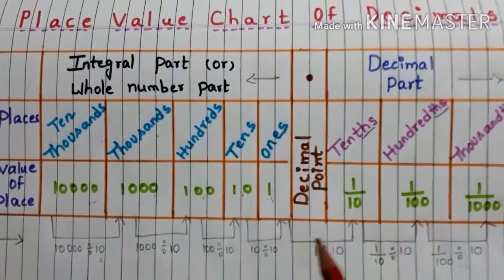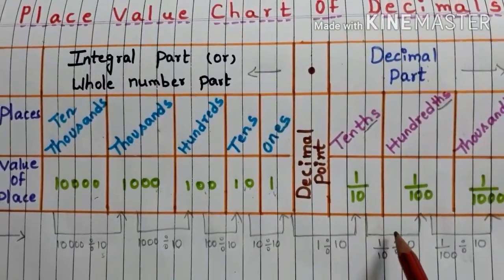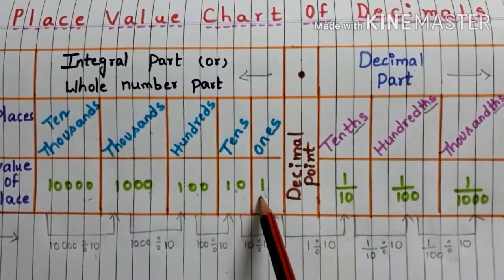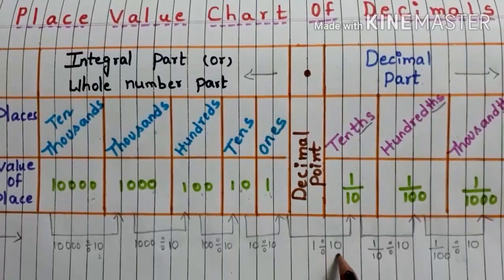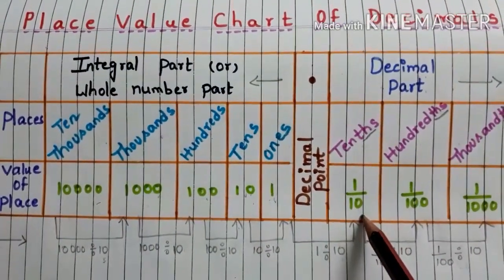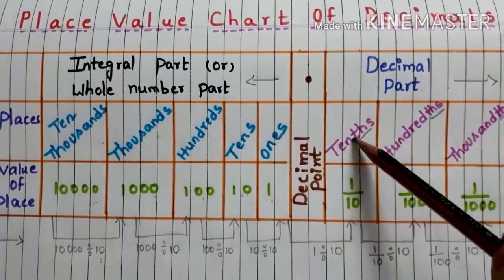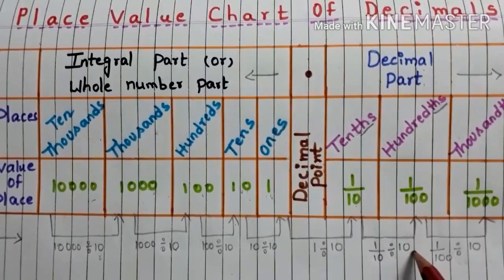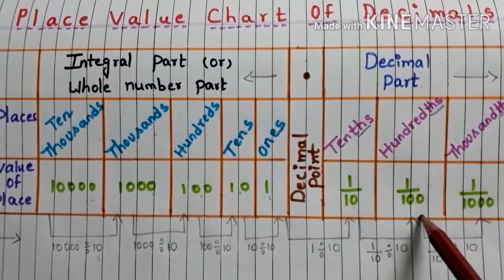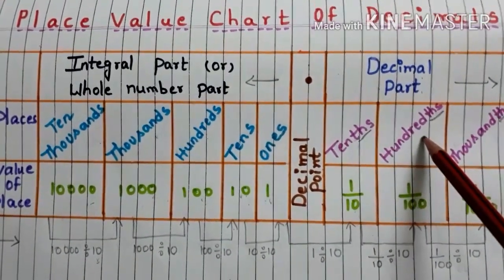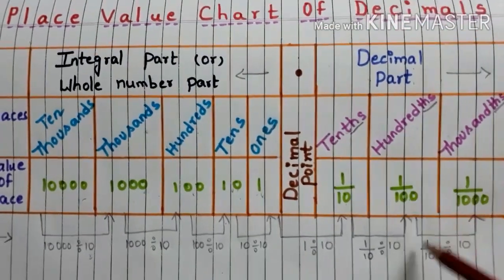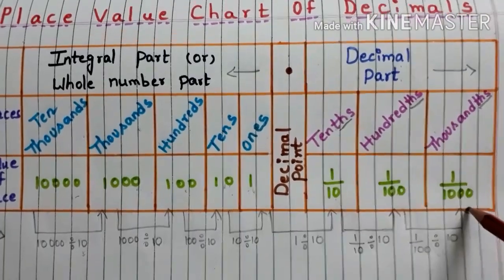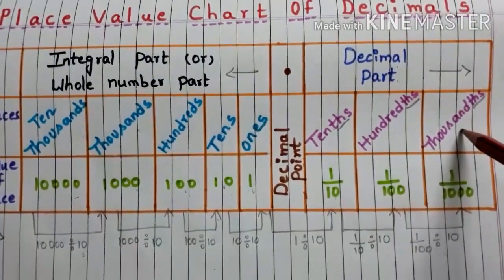When we move further, we get the places and place values of the decimal part. When 1 is decreased by 10 times, it gives 1/10, and that place is known as tenths. Further, 1/10 decreased by 10 times gives 1/100, and that place is known as hundredths. Further, 1/100 decreased by 10 times gives 1/1000, and that place is known as thousandths.